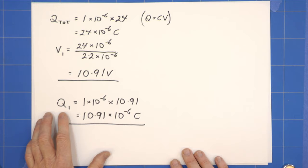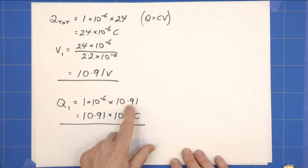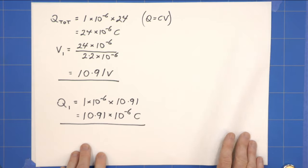Similarly then the charge on capacitor 1 must have gone down since the voltage has gone down and it's the capacitance times the new voltage which gives us 10.91 times 10 to the minus 6 coulombs.